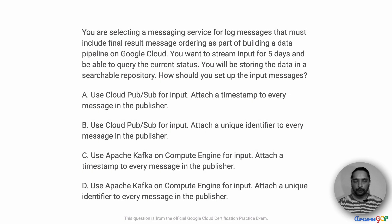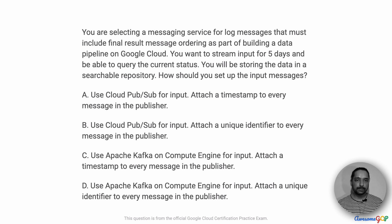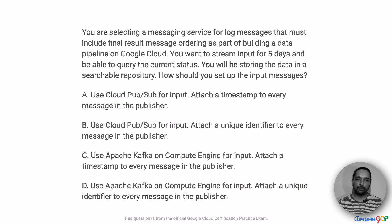In this project scenario, you are selecting a messaging service for log messages that must include a final result message ordering as part of building a data pipeline on Google Cloud. You want to stream input for five days and be able to query the current status. You'll be storing the data in a searchable repository. How should you set up the input messages?